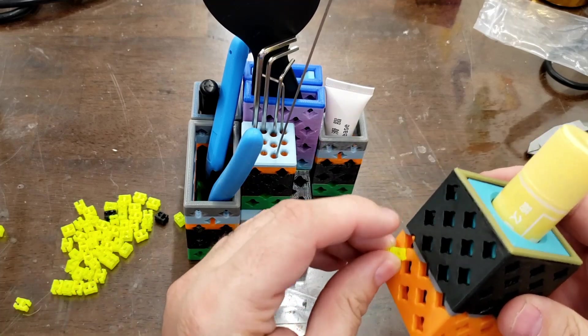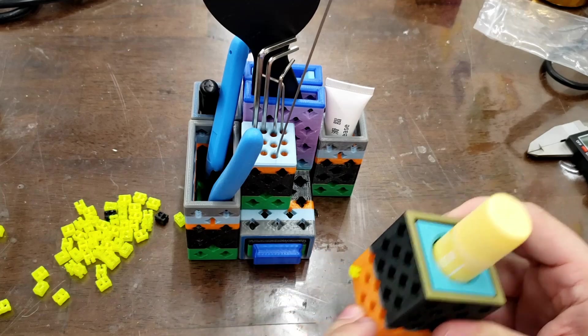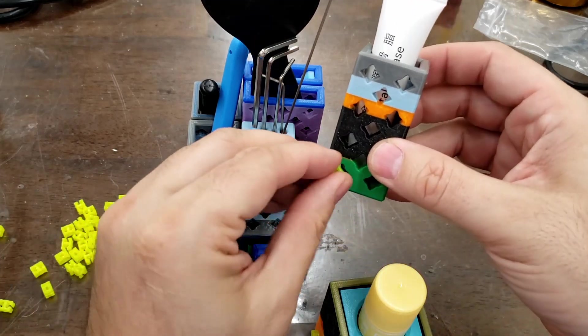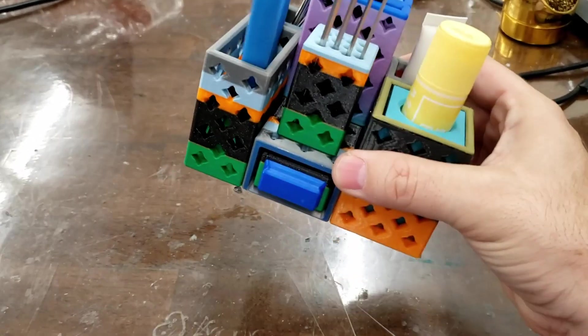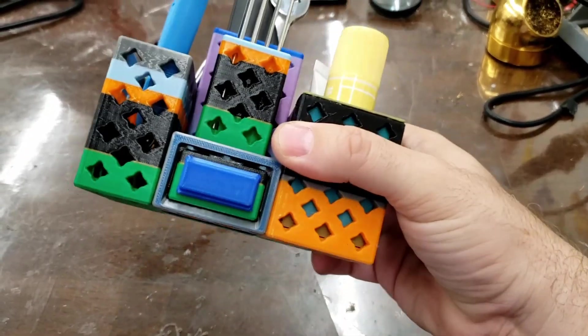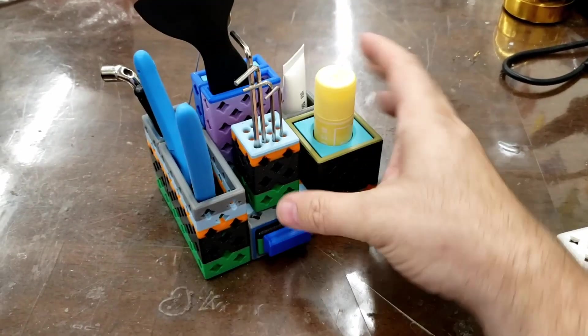But once I have everything the way that I want it, it's just a matter of bringing in some connectors, putting the connectors in the appropriate holes to connect them and turning this all into one giant holder for all of your tools. Now that that's all together, I wanted to show you how stable it all was, how it all just holds together without any additional hardware. That is the power of Print-A-Block.